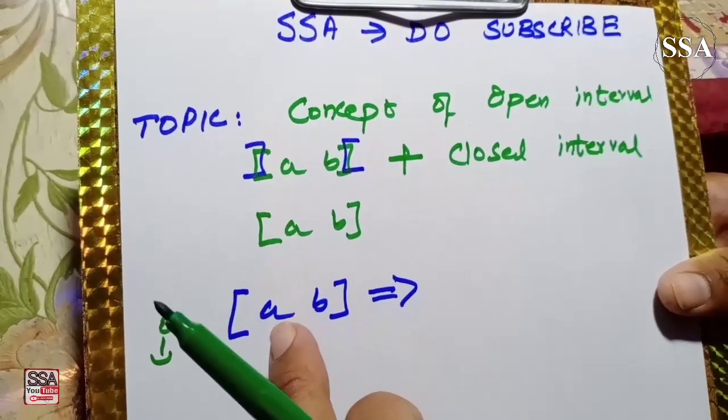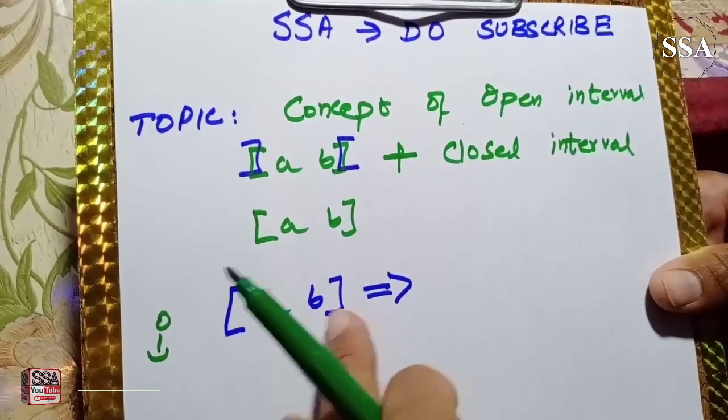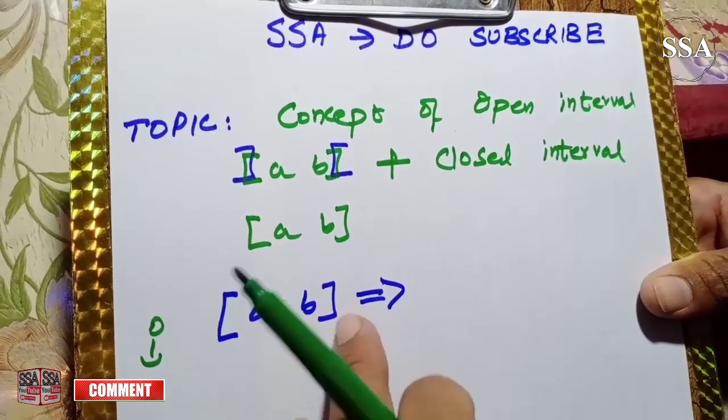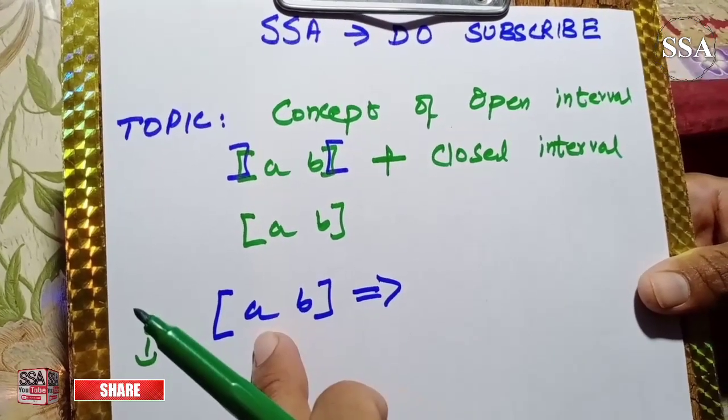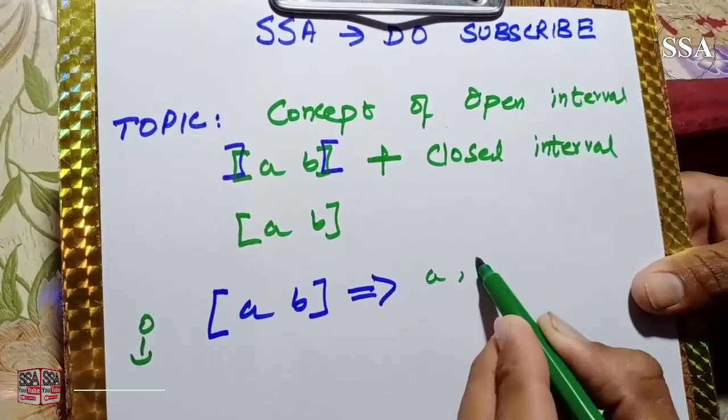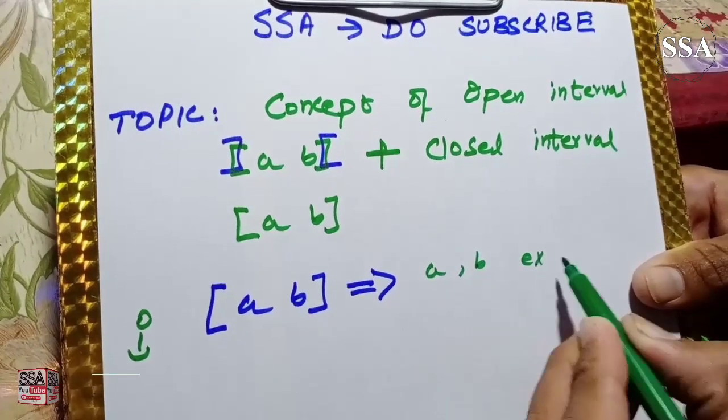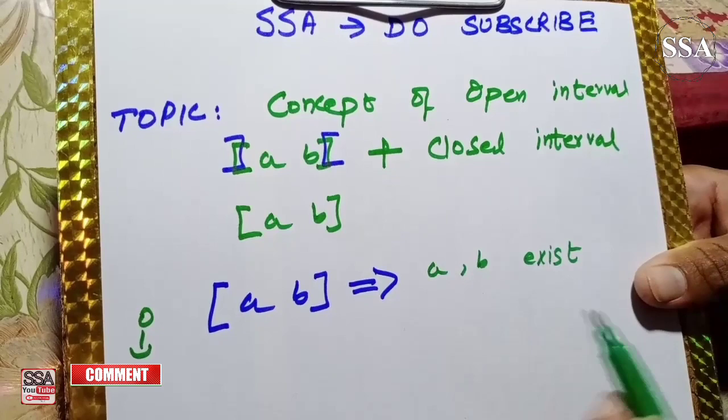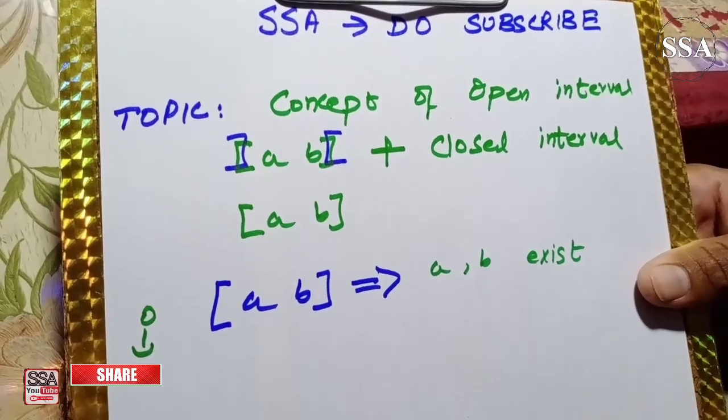In closed interval, the boundary values are included. Close me kya hoti hai - boundaries value shamil hoti hai. This means a or b exist and are included in the interval.